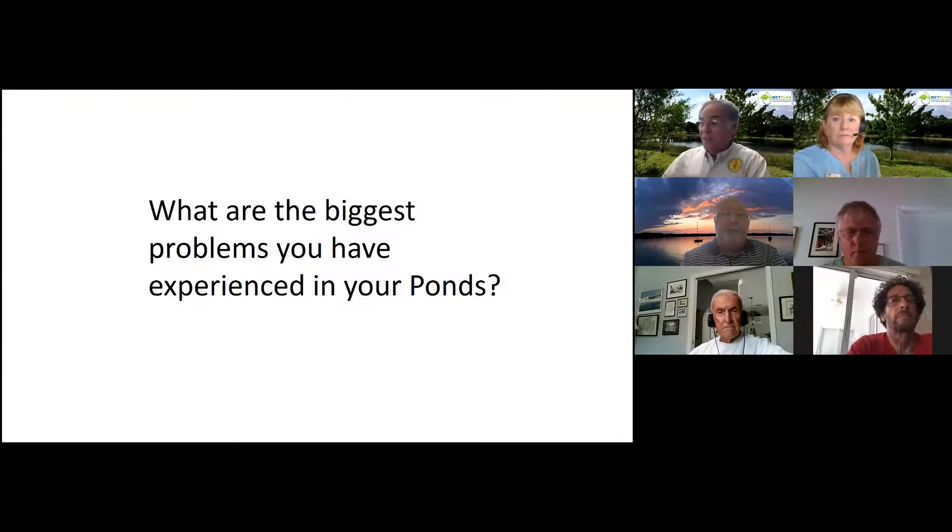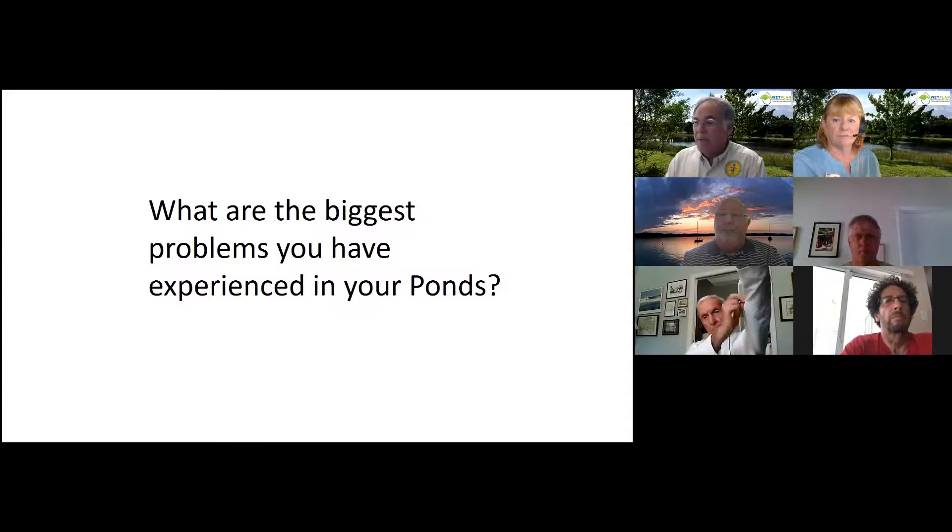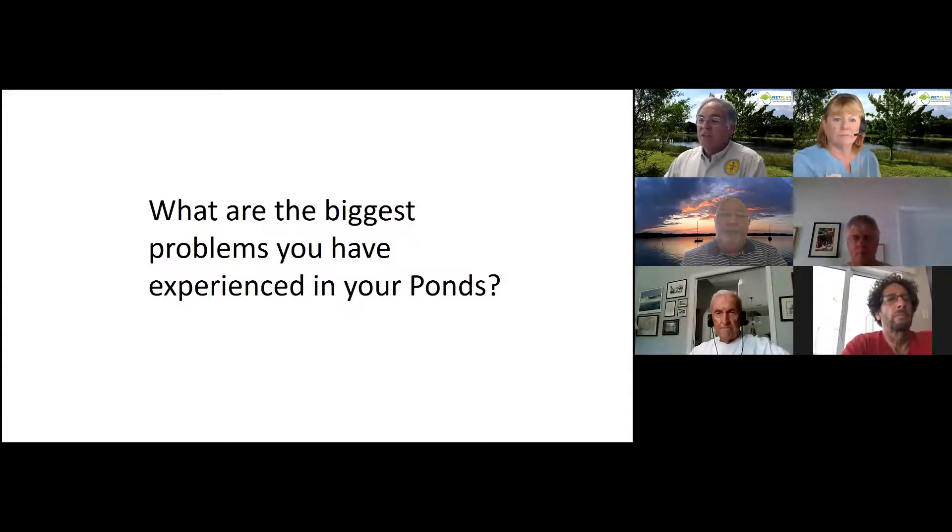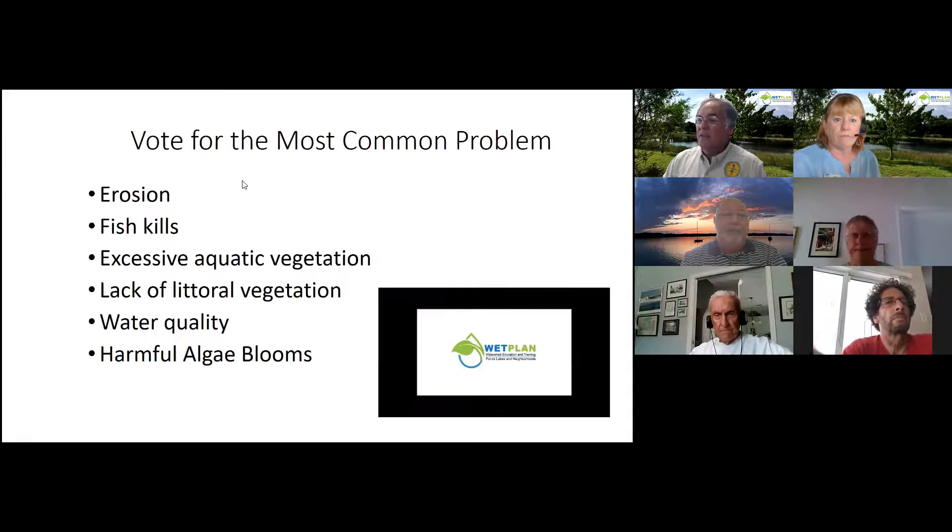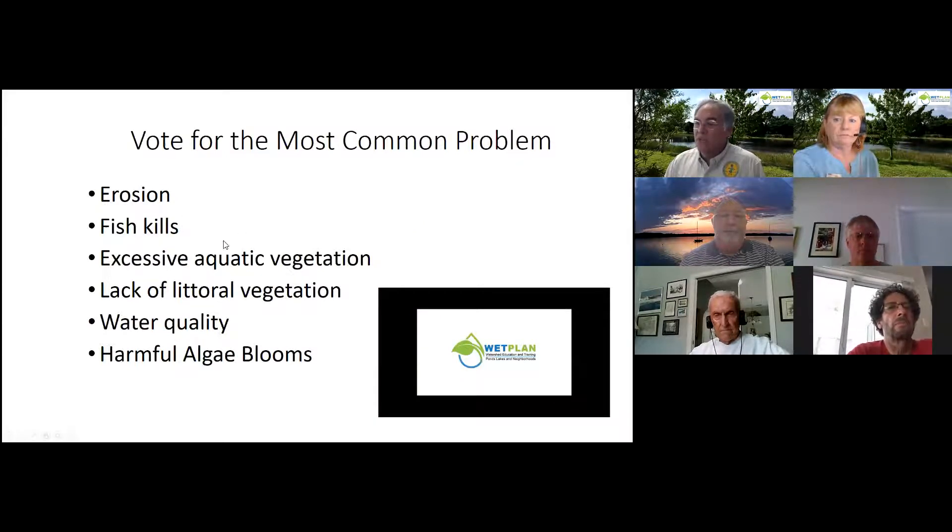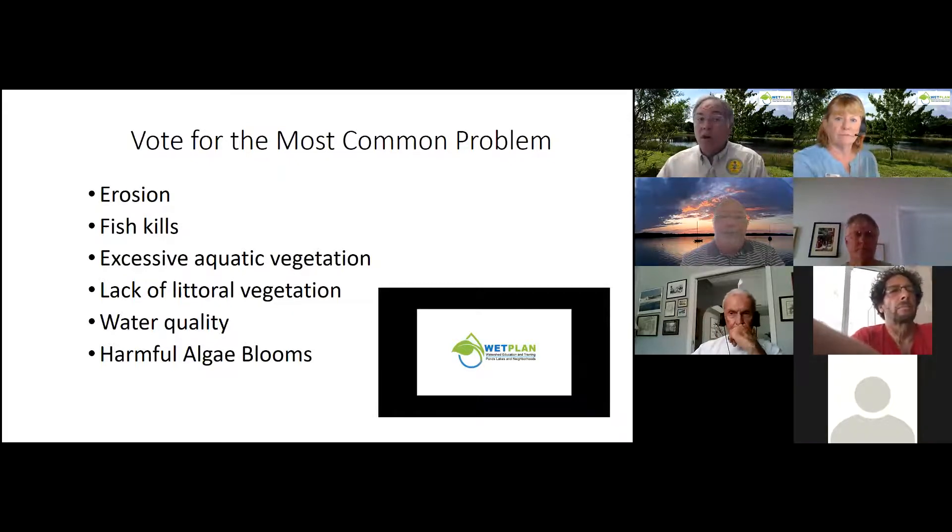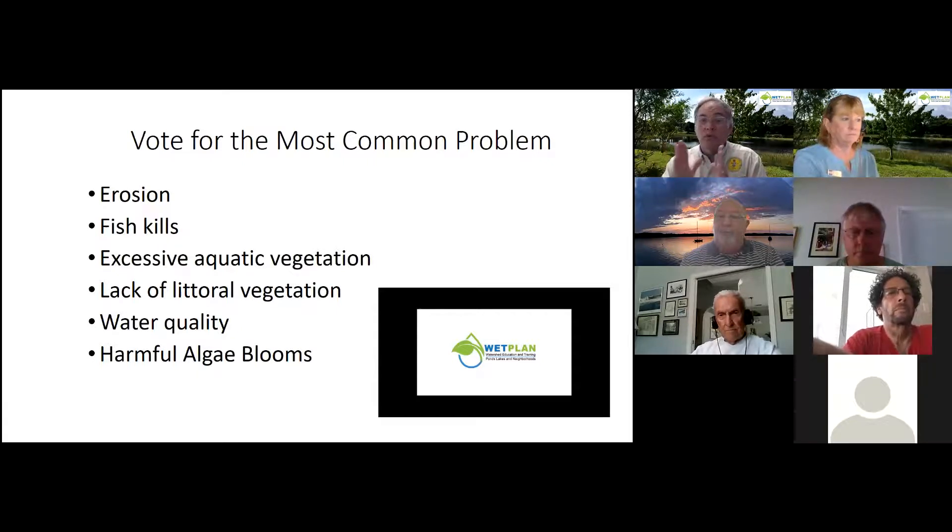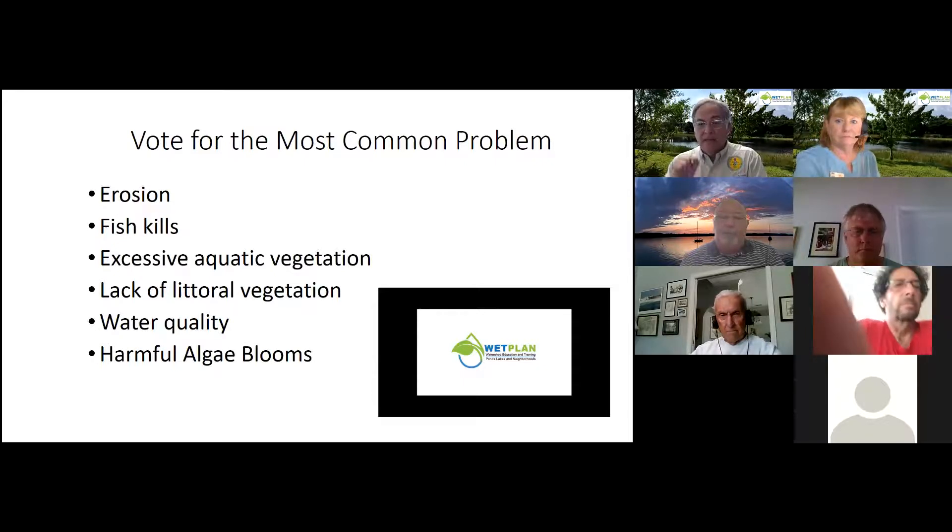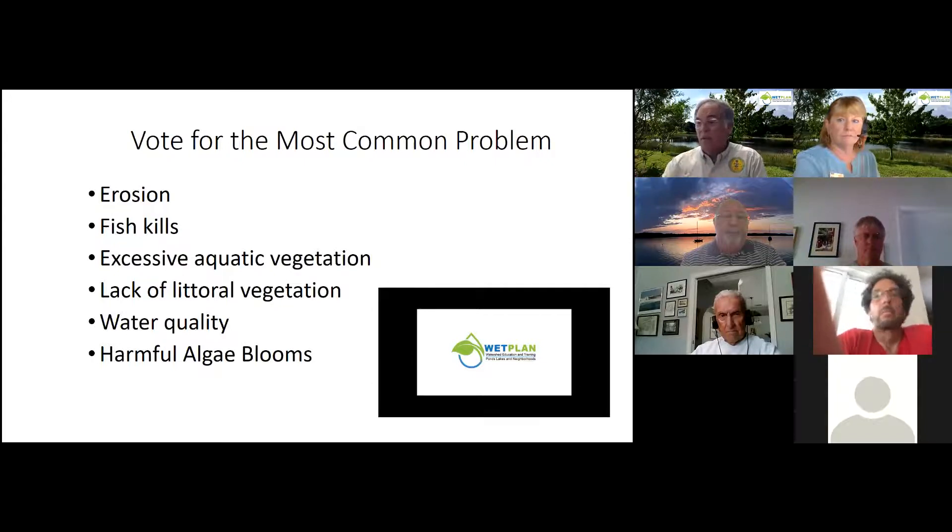So now it's part of your participation. If you want to scribble or have a piece of paper, we're going to be presenting. What are the biggest problems you have experienced in your ponds? We have a list here on the left: erosion, fish kills, excessive aquatic vegetation, lack of littoral vegetation, water quality, harmful algae blooms. So these are the things that we have collected. What we're going to want to do is to tally them. You can now start sending in the chat the name or the word that you see on these choices, and Molly will be collecting that information.